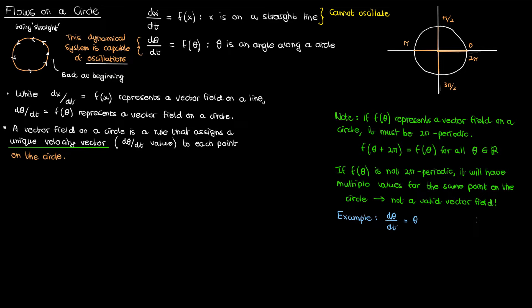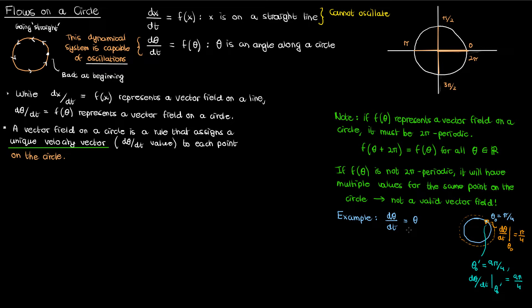Let me give an example. Consider the dynamical system dθ/dt = θ. Looking at the point θ₀ = π/4, the rate of change of θ is also π/4 radians per second. If we follow the velocity vector counterclockwise around the circle and arrive at θ = 9π/4, the rate of change is now 9π/4. So at the same point we had dθ/dt equal to both π/4 and 9π/4 — two different velocities at the same point — which is why this dynamical system on a circle is not a valid vector field.